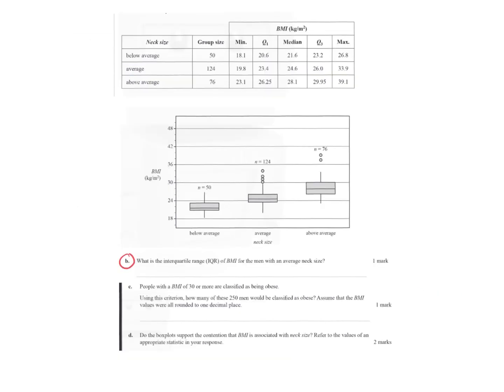With question B, it says what is the interquartile range for BMI for the men with an average neck? So we want the IQR. So IQR is actually this bit in here. It's a bit hard to read on the box plot, but remember they gave us all of that up here. So I can read off the Q3 and Q1.